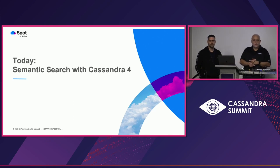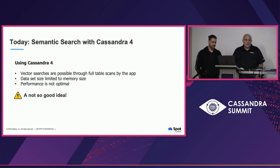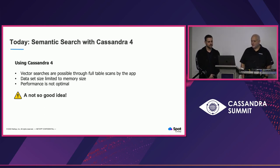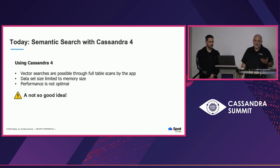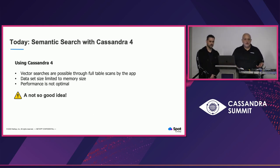In Cassandra 4, you can store vector data in the database, but there is no specific vector data type. So if an application wants to access vectors, it has to perform a full table scan every time you query the data. With large data science workloads for AI and NLP, the application has to load all the table data into memory, and memory limitations can be a problem.